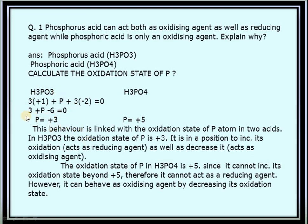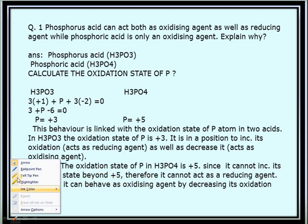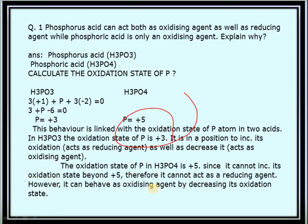In H₃PO₃, phosphorus is in a lower oxidation state, so it can act as both an oxidizing agent and a reducing agent by changing its oxidation state. But in H₃PO₄, phosphorus is in the +5 state, which is its maximum possible oxidation state. Since it cannot increase its oxidation state further, it can only act as an oxidizing agent, not a reducing agent.